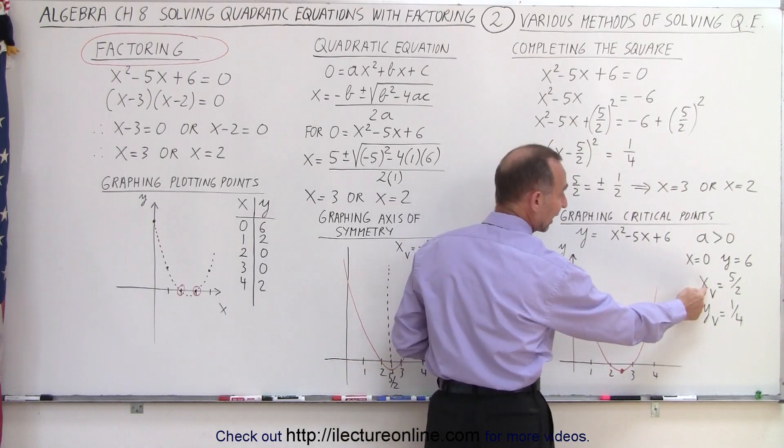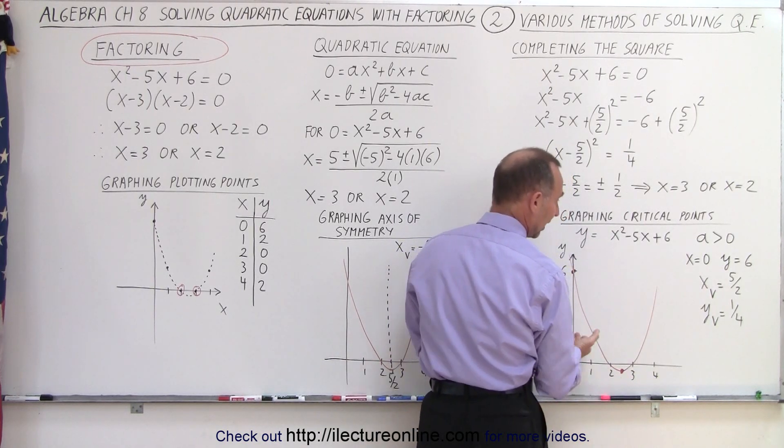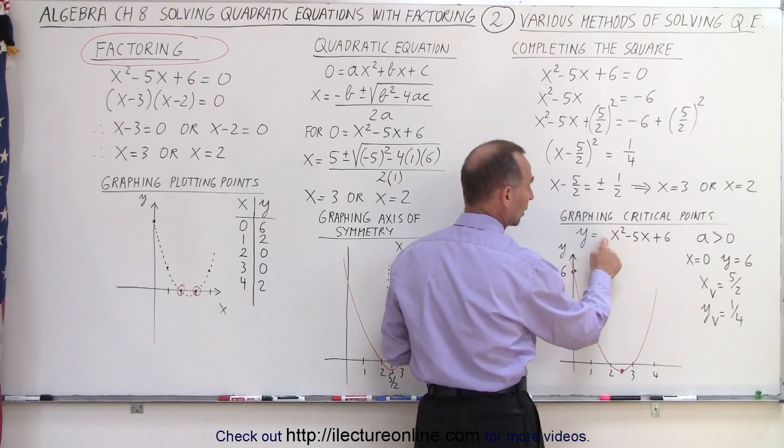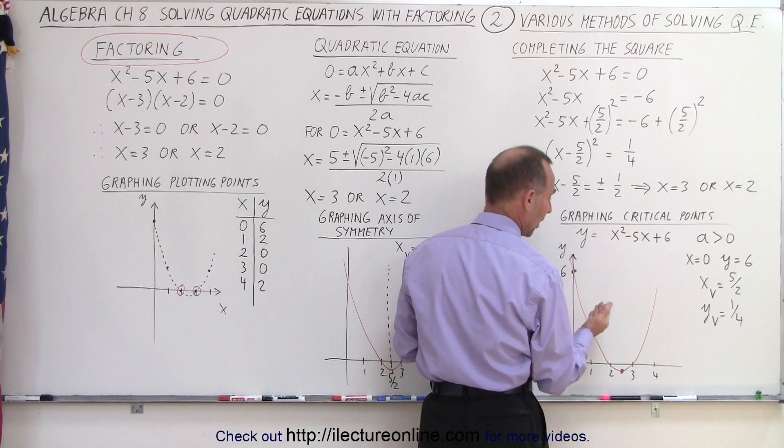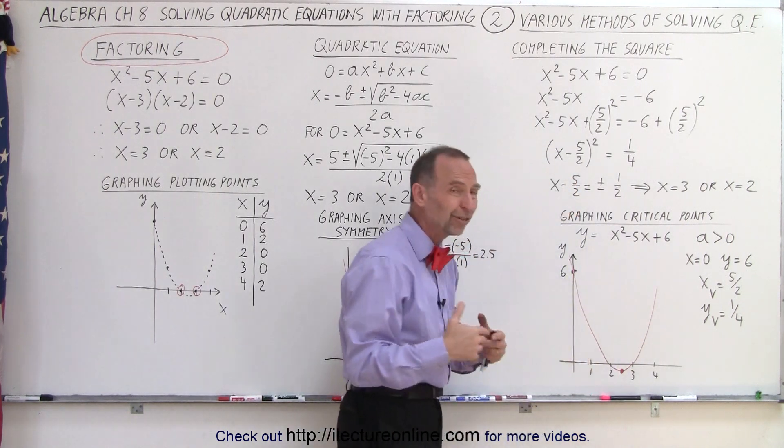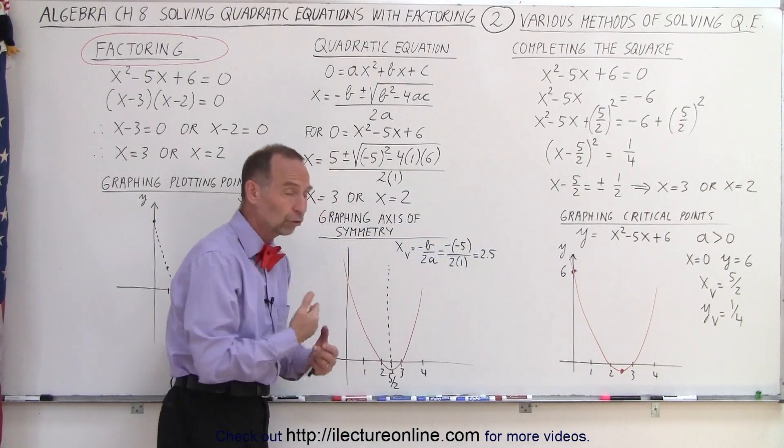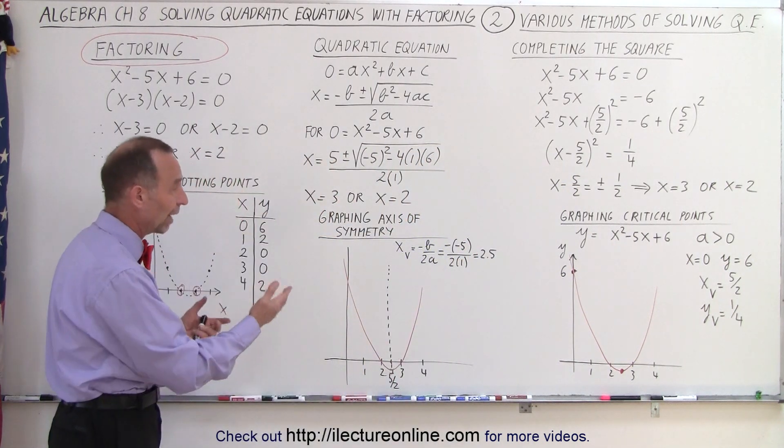Then we can find the x and y coordinates of the vertex. And then we realize, since the coefficient in front of the x-squared term is positive, it opens upward. So there are various ways in which you can find the solution to the quadratic equation graphically.